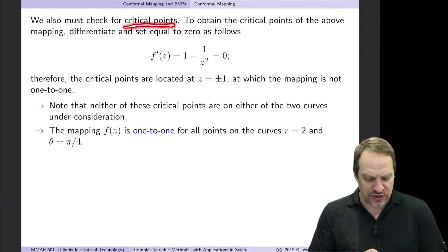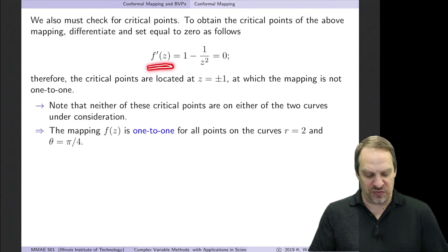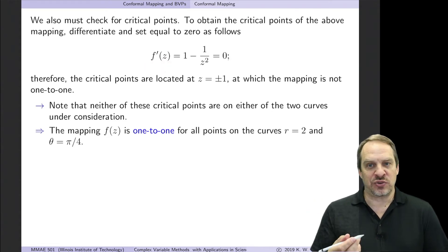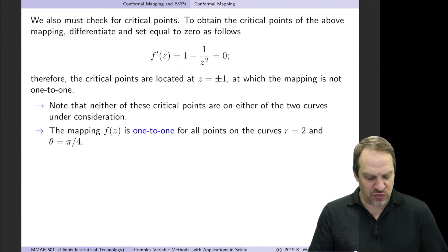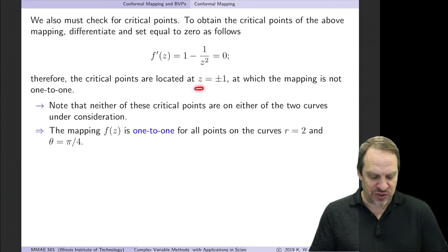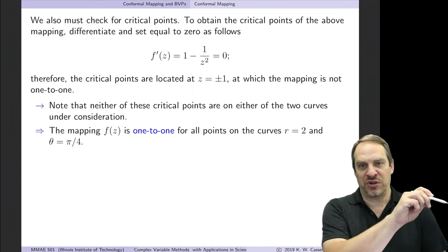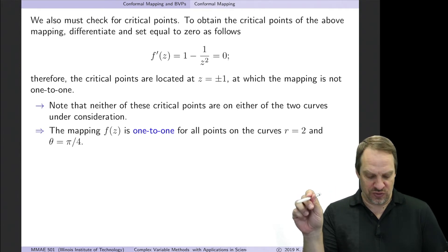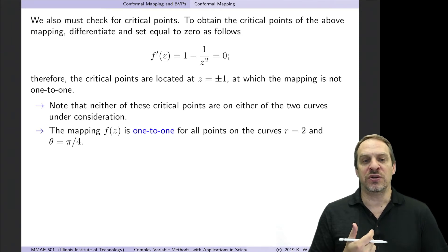The second criterion is to check for critical points where f'(z) = 0. The easiest approach is to differentiate the original form z + 1/z with respect to z and set it equal to zero. So f'(z) = 1 − 1/z² = 0, which gives z = ±1. These two critical points — z = +1 and z = −1 on the real axis — are points where the mapping is not one-to-one. At every other point it is analytic with f'(z) ≠ 0, so it is one-to-one.